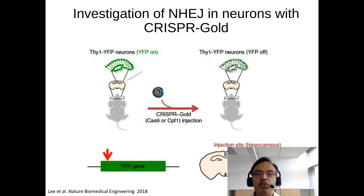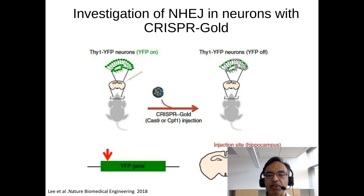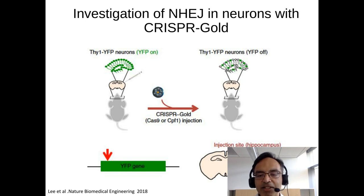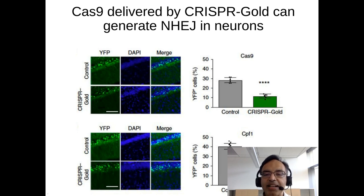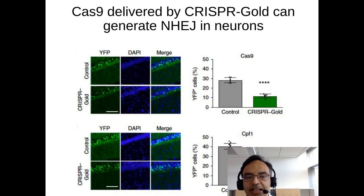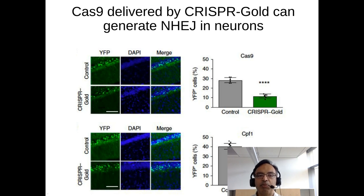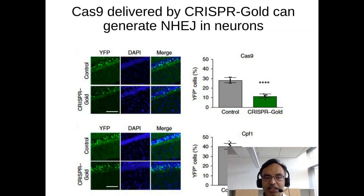We investigated if CRISPR-GOLD could do editing in neurons specifically, using a mouse model where YFP is only expressed in neurons. We made CRISPR-GOLD designed to knock out the YFP gene by NHEJ and injected it into the hippocampus. In control mice, about 30% of cells on a histology slide are YFP-positive neurons. That dramatically decreases to about 10% with CRISPR-GOLD carrying either Cas9 or CPF1, demonstrating fairly efficient gene knockout after intracranial injection — knockout rates of around 50%.